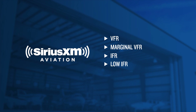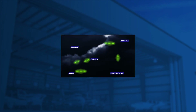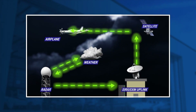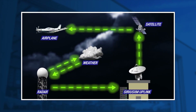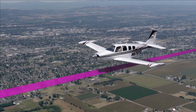It will also give headwind and crosswind data for the longest runway at the destination airport. For weather to be a consideration, the aircraft must have data link weather available, as well as the destination having weather reporting capabilities, or be within 5 nautical miles of another airport that has weather reporting capabilities.